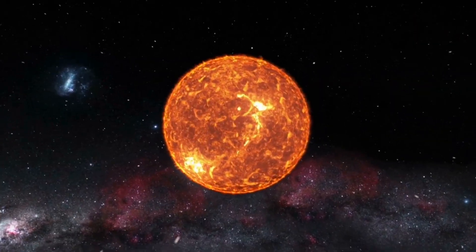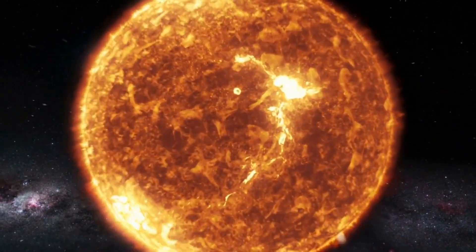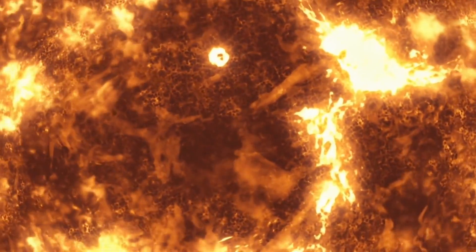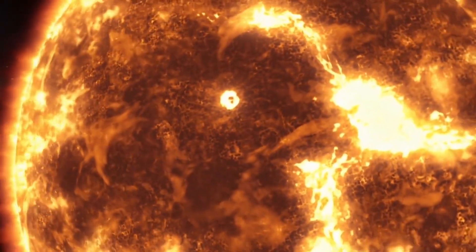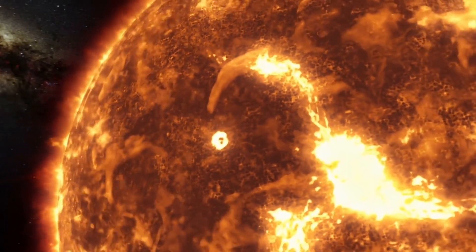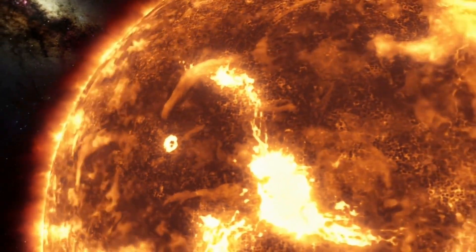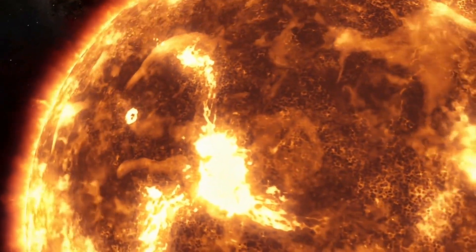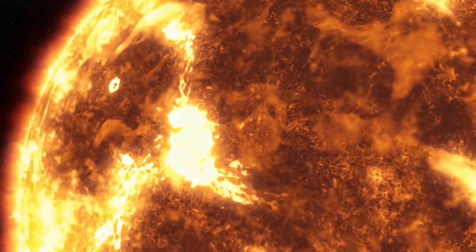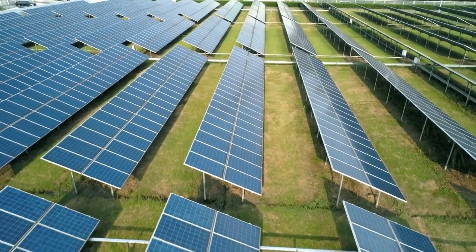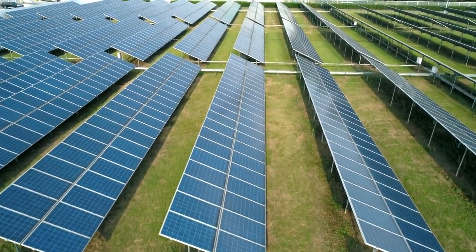The sun's energy output is so powerful that it could power the entire world's electricity needs for millions of years. The sun is a massive ball of energy, and its energy output is so powerful that it could power the world's electricity needs for millions of years. In fact, just one hour of the sun's energy could power the entire world for a year.